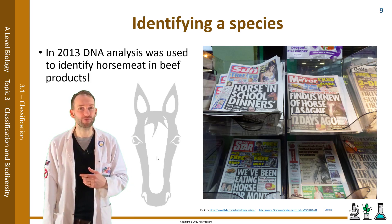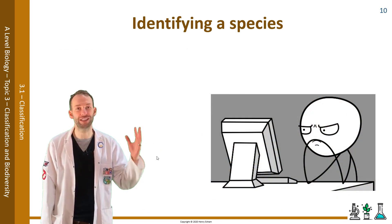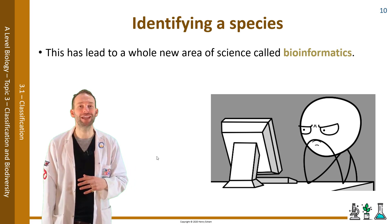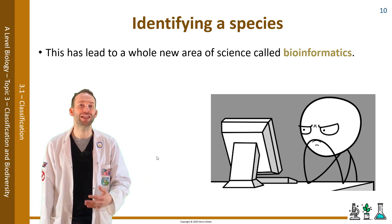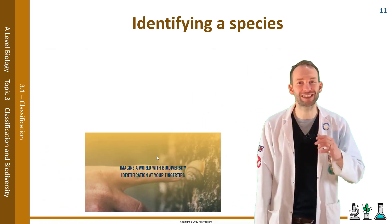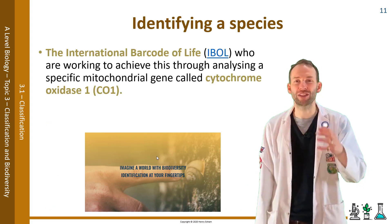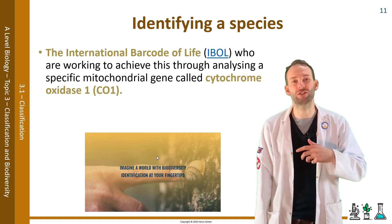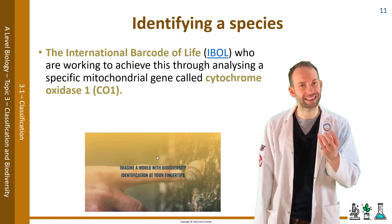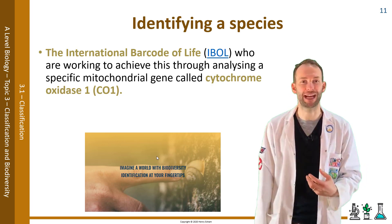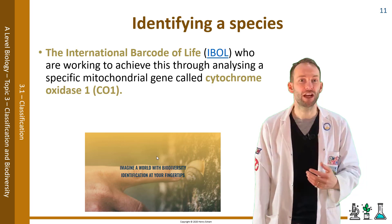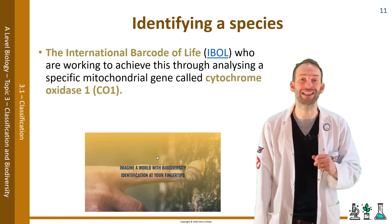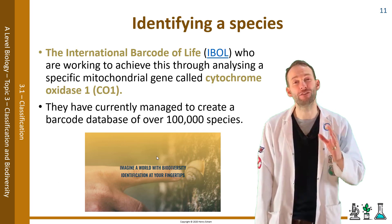There's a huge amount of data being collected all over the world by sequencing the DNA of different species and putting it into databases, and this has led to a whole new area of science called bioinformatics. One of the coolest ideas to come out of this field is the concept of a living barcode - imagine if you could scan an organism live in the field from your smartphone and find out everything about it: its name, its evolutionary journey, its mating rituals, whether it's dangerous. This is the dream of the International Barcode of Life organization, who are analyzing a specific mitochondrial gene called cytochrome oxidase one, or CO1, and have created a barcode database of over a hundred thousand species.